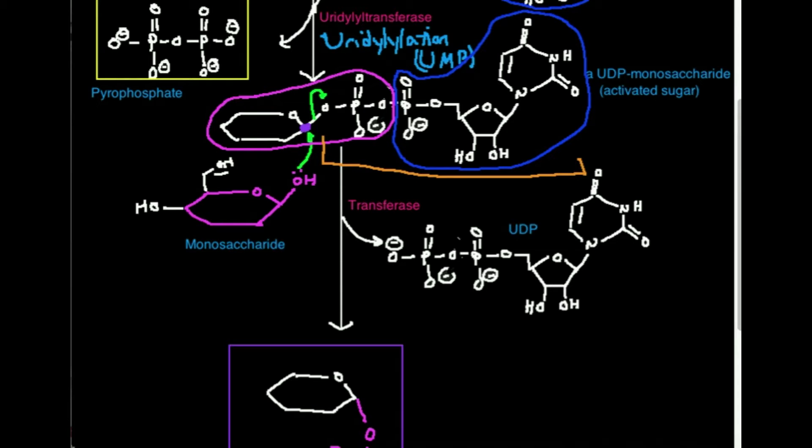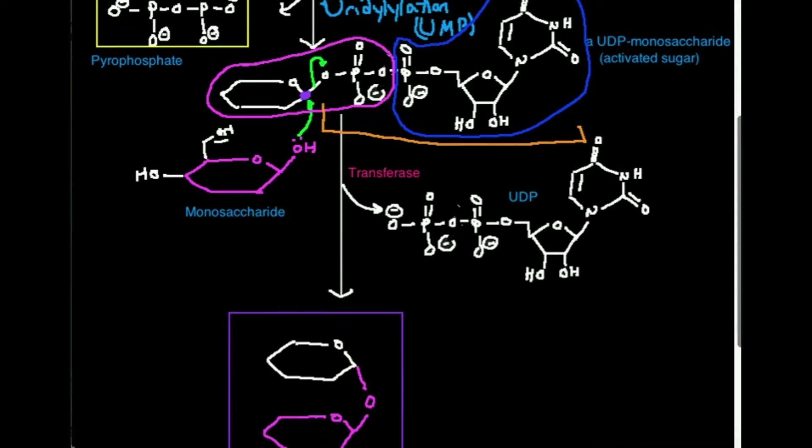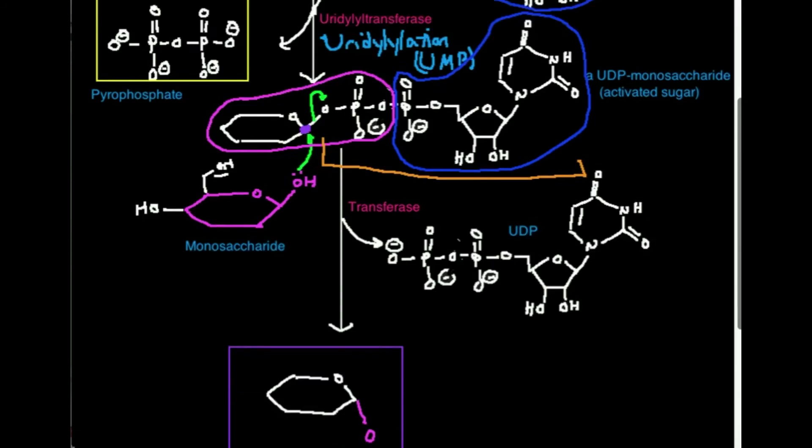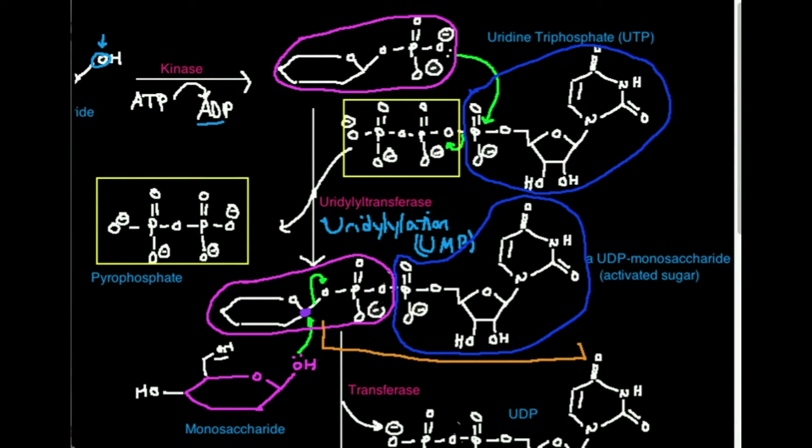In some cases, it's the hydroxyl up here. It could be this one. It could be any on positions two or three. The point is, this is the strategy that's going to be used to synthesize dimers and trimers and so forth up to polymers of sugars. This is what's going to be used.